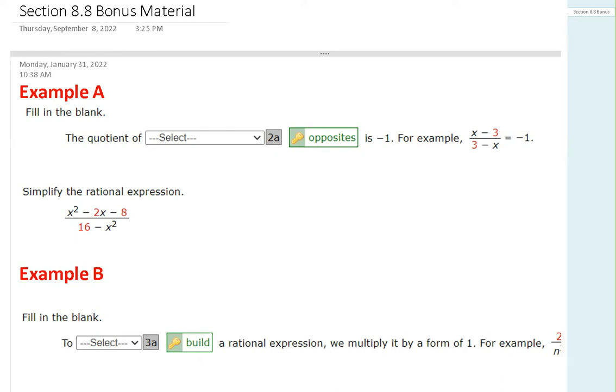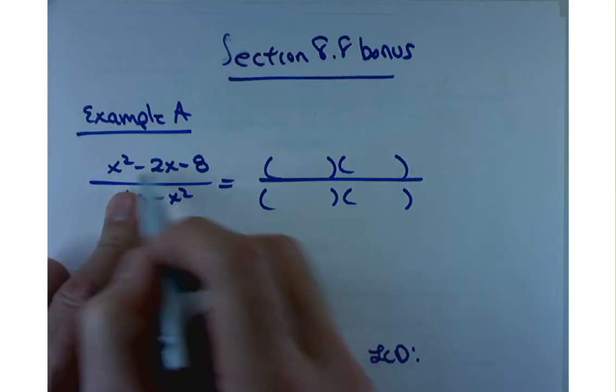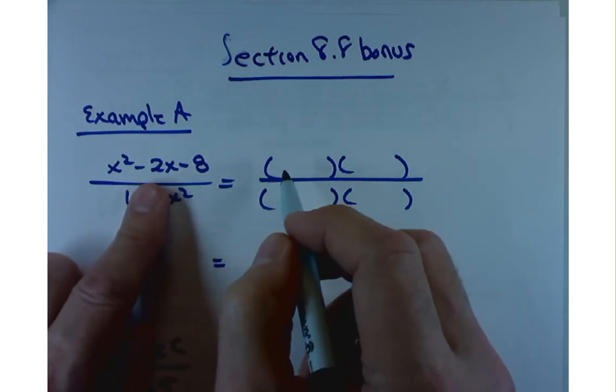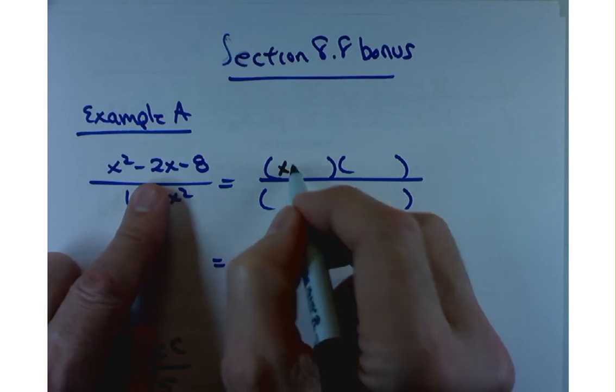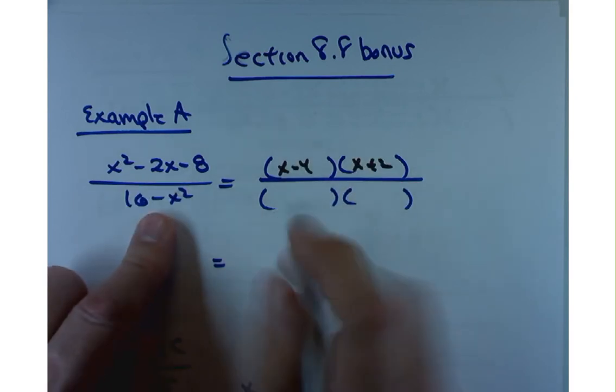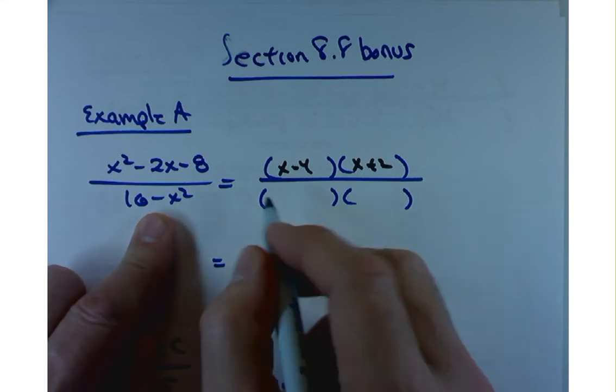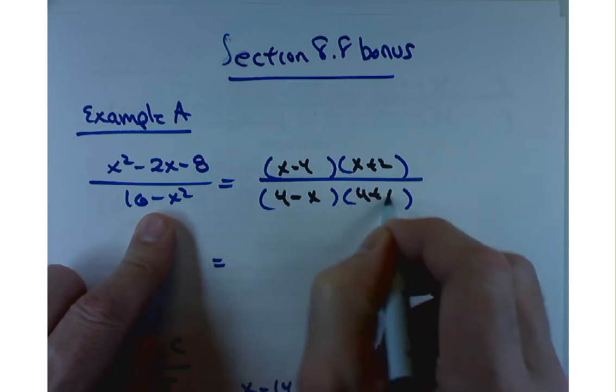Let me give you an example of something like that. If you were to factor x squared minus 2x minus 8, then you'd get x minus 4, x plus 2. And then how about the denominator? How does that factor? A lot of people want to say x minus 4 and x plus 4. That's not quite right. It'd be 4 minus x and 4 plus x.